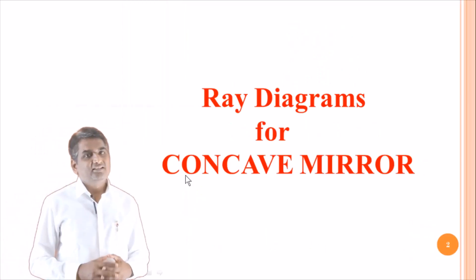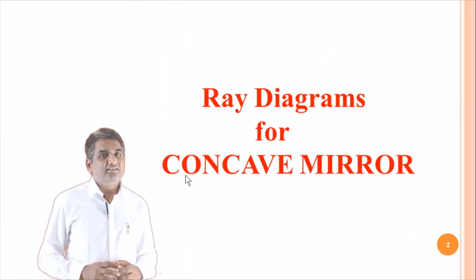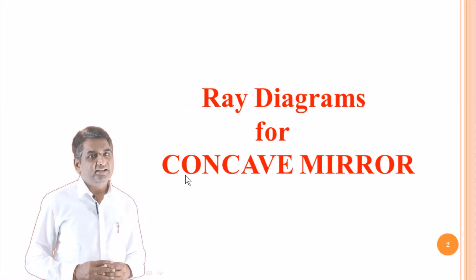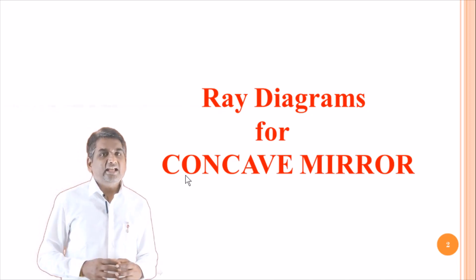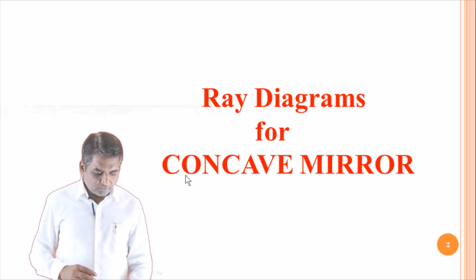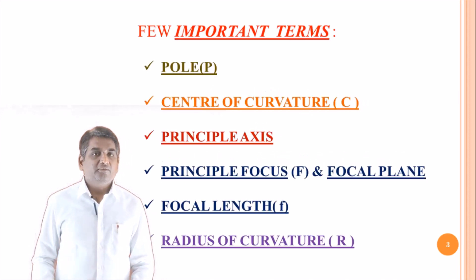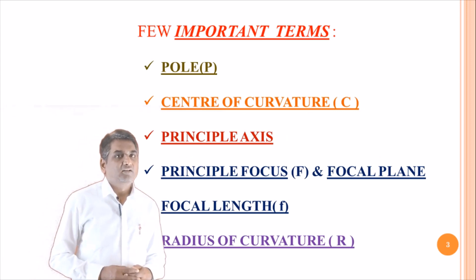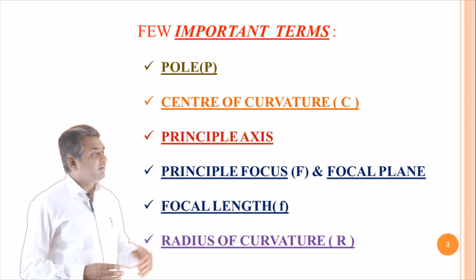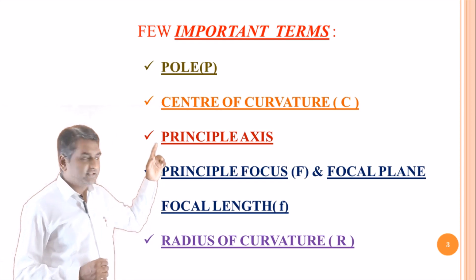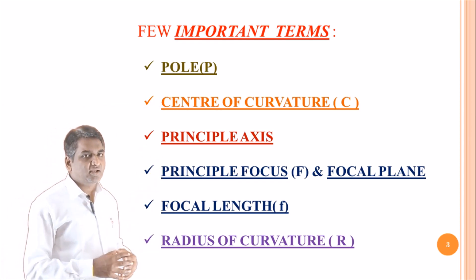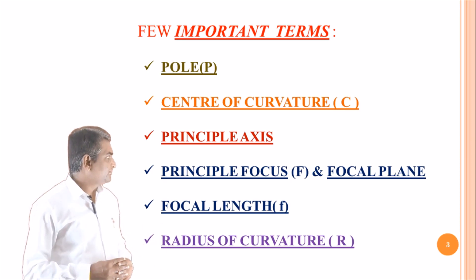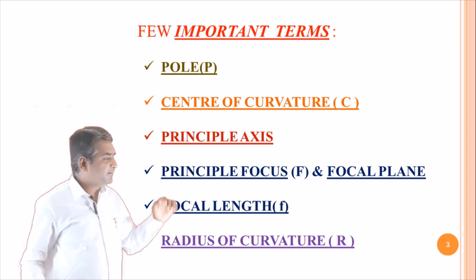So dear students, in today's class we are discussing about ray diagrams for concave mirrors. To study the ray diagrams, we should have an idea about a few technical terms. What are those? Pole, center of curvature, principal axis, principal focus and focal plane, focal length, and radius of curvature. Let us discuss them one by one.